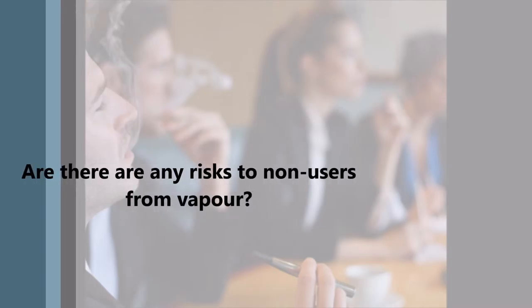Are there any risks to non-users from vapor? Electronic cigarettes do not produce smoke, but users breathe out a smoke-like vapor which is made up largely of propylene glycol and glycerine. The amount of nicotine present is about one-tenth of that found in secondhand smoke from conventional cigarettes. Any health risks of secondhand exposure to propylene glycol vapor are likely to be limited to irritation of the throat. A long-term animal study showed no major adverse effects.